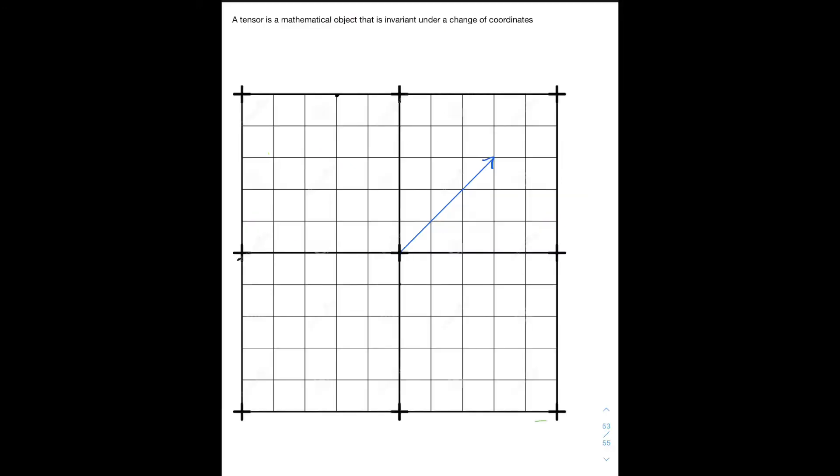Now, I know that's a lot to chew, so we're going to take small baby steps. I've used the word tensor a lot, but I never actually defined it. The tensor is just a mathematical object that is invariant under a change of coordinates, meaning that no matter what coordinate system you use, tensors will always be the same.